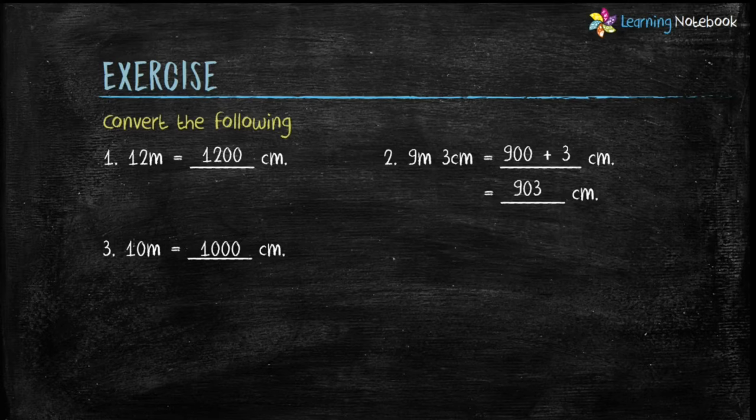Next: 6 kilometers equals to how many meters? We know 1 kilometer equals to 1000 meters, so to convert 6 kilometers into meters we multiply by 1000. Therefore, 6 kilometers equals to 6 into 1000, which equals to 6000 meters.